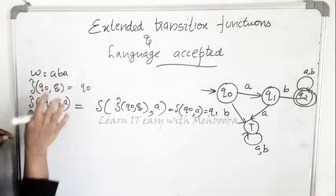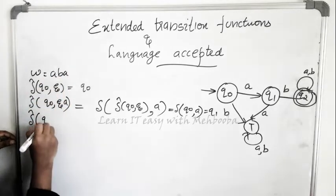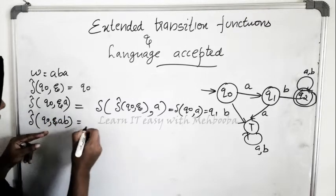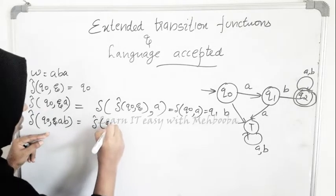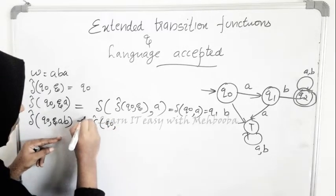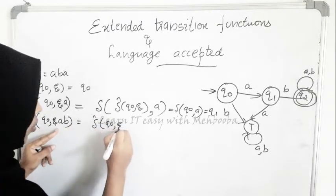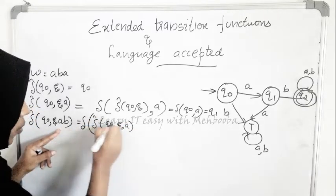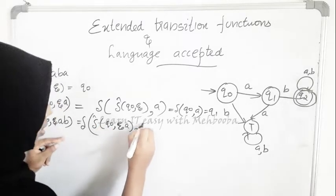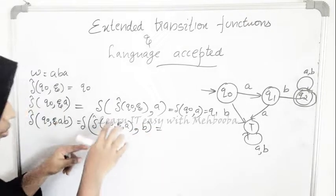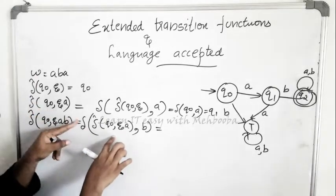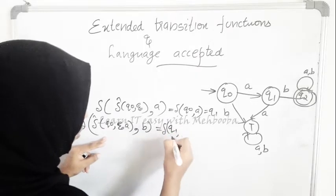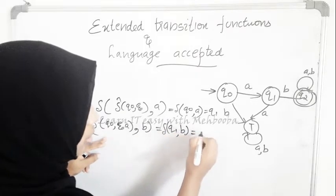Now adding the next character B: delta-cap(q0, epsilon·A·B) can be written as delta of delta-cap(q0, epsilon·A), comma B. We know delta-cap(q0, epsilon·A) = q1, so this becomes delta(q1, B) = q2.